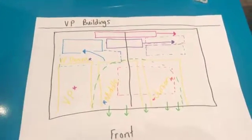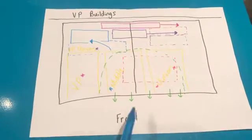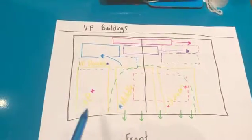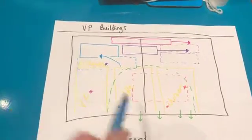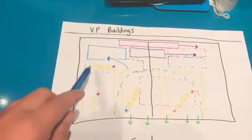Hi everyone, this is how the whole dance is going to go. So here's the front and the VP buildings are here. We're going to be lined up: VP, middle school, and junior school.